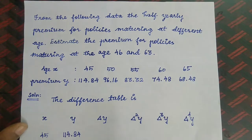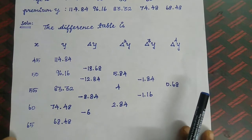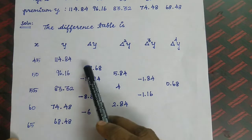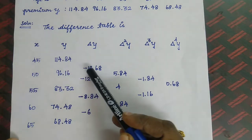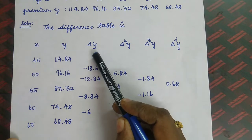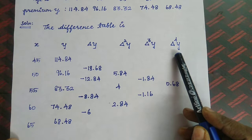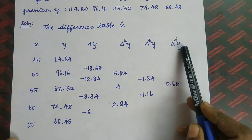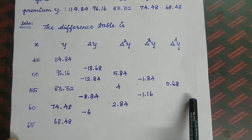First we will form the difference table. Given the X data and Y data, we write the Y values in a column and use a calculator to find differences between successive elements. This gives us Δy, Δ²y, Δ³y, and Δ⁴y. In this problem the differences go up to the fourth order, and using a calculator we obtain all the difference table values.